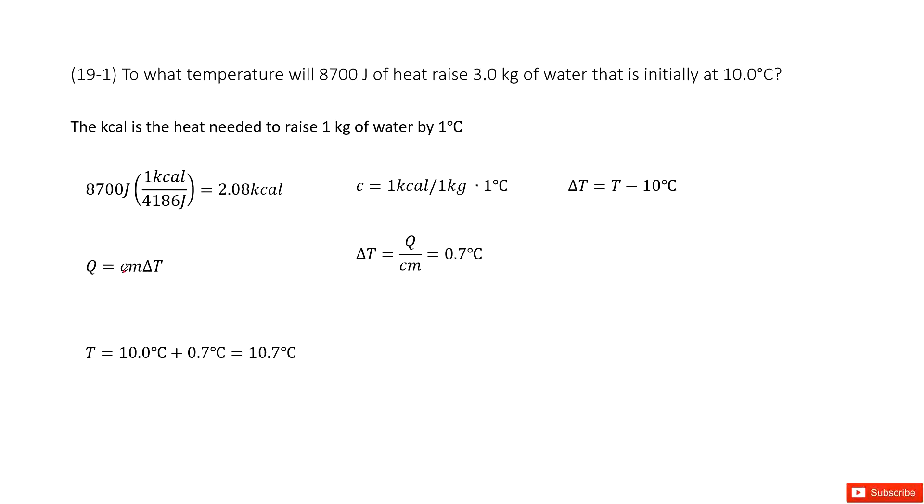Next, c is a constant called specific heat. We can check our textbook to find the specific heat for water, which is 1 kcal per kg per °C. This is a constant you can remember.